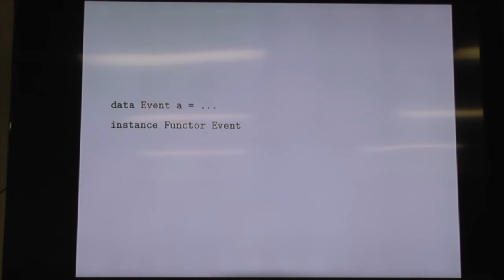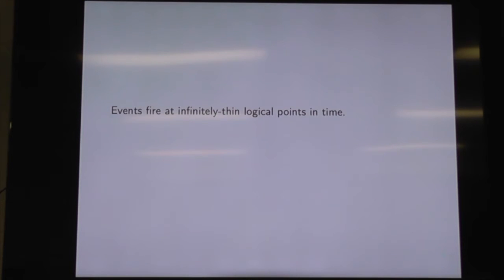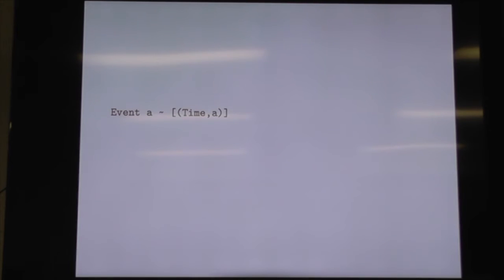Let's look at events. In Reactive Banana, we have a data type for events with a type parameter and a functor instance for it. Events fire at infinitely thin logical points of time, like button presses or keystrokes. The semantics: it's like a list of pairs of times and values, where times are increasing. There's probably some time-travelling FRP out there, but I don't even want to know about it.